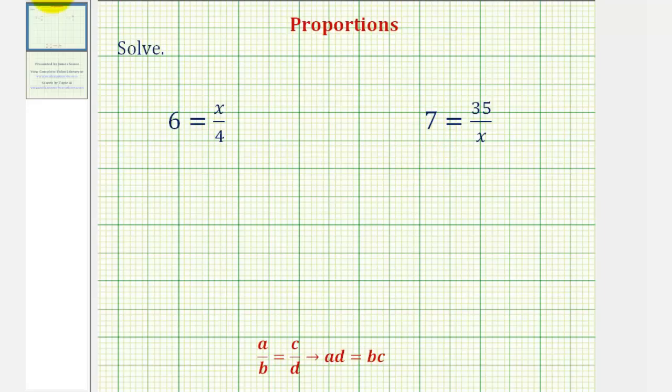Normally when asked to solve a proportion, we have two ratios equal to each other. When it's in this form, we know that the cross products must be equal, or A times D must equal B times C.